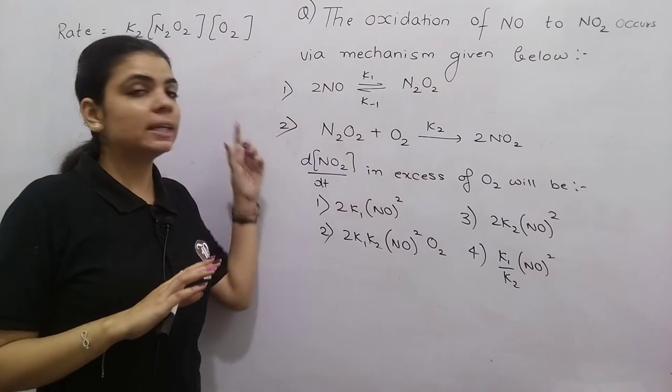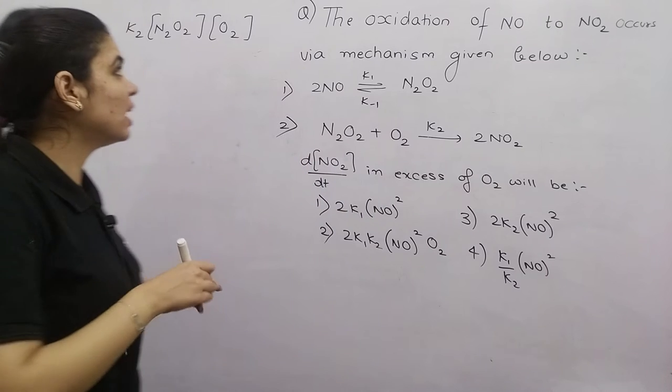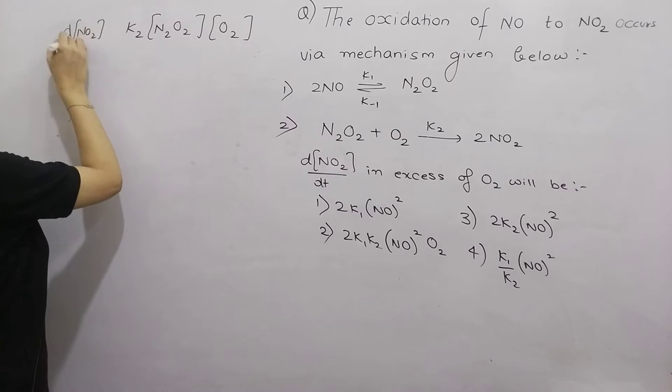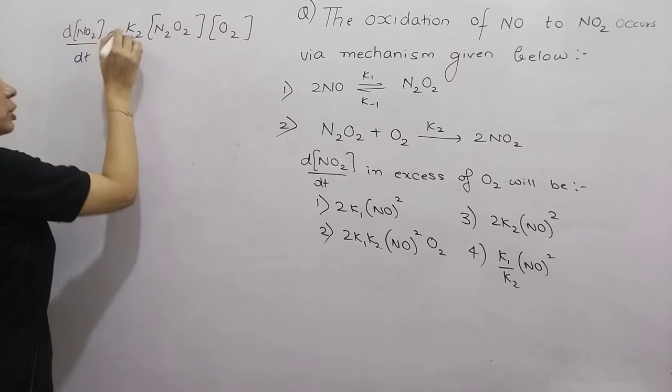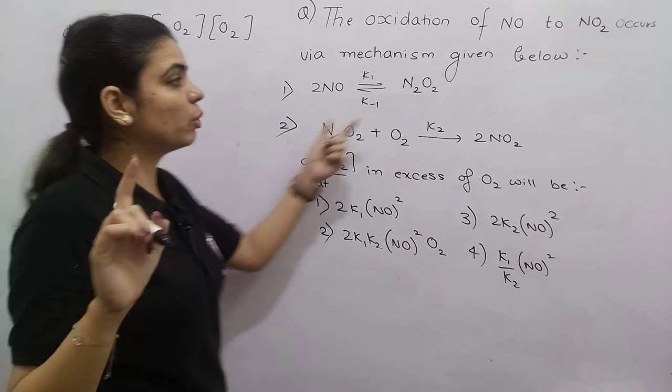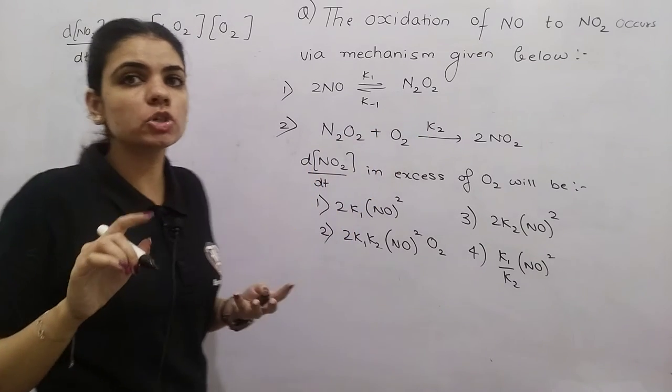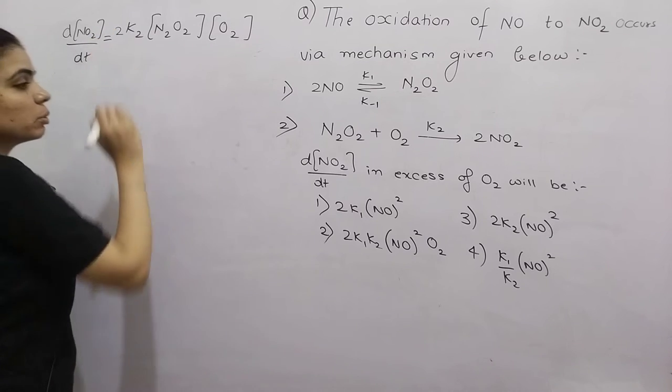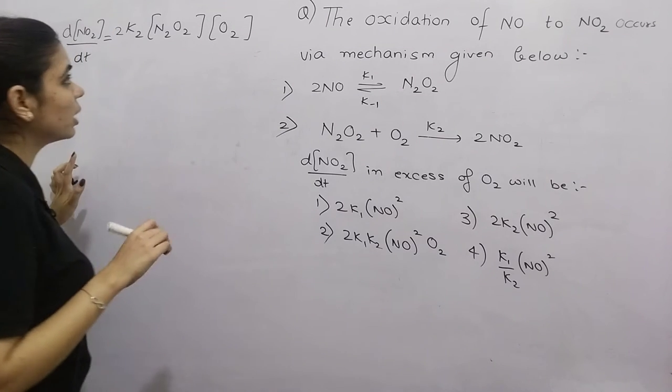But this is the rate expression for the reaction. If I replace it with the rate of NO2 formation, look carefully - when this reaction happens once, I get 2 NO2 molecules. So the rate of formation of NO2 will be twice this reaction rate.